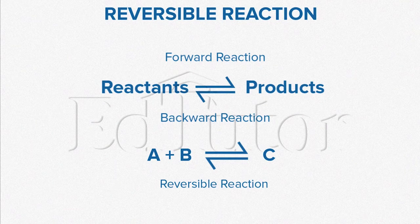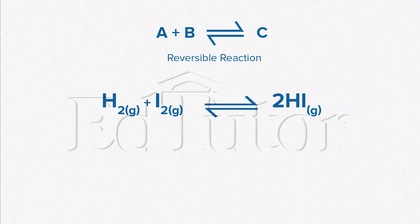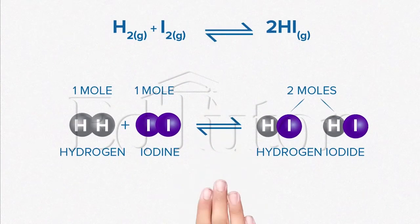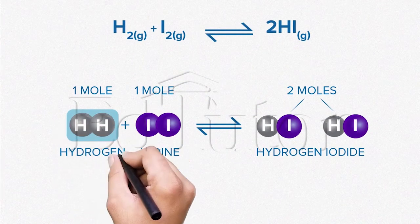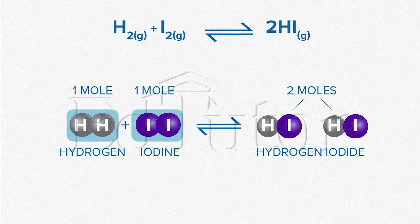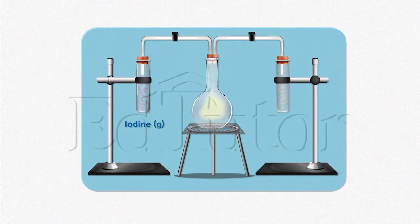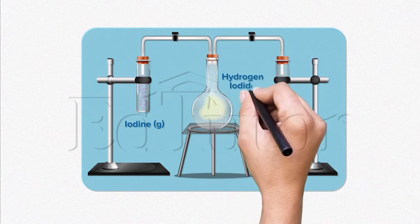Are you getting it? Great! Let's explore some examples of reversible reactions. We will start with the reaction between hydrogen gas and iodine gas that produces hydrogen iodide. Here, the reactant iodine is purple, while the product hydrogen iodide is colorless.